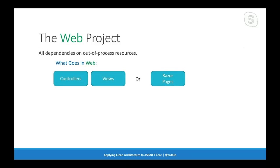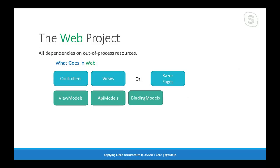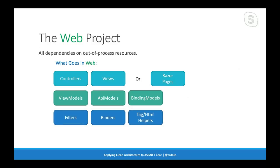In the web project you'll have controllers, views, and Razor Pages — the reference app eShop on Web actually has all three to show you how they work together. View models, API models, binding models, and DTO types generally live in the web project, with exceptions where you might pull them into core for shared use. MVC filters, model binders, tag helpers — all web-specific stuff — go in the web project. Application services and their interfaces might live there as well, which is the approach used in eShop on Web mostly for simplicity.